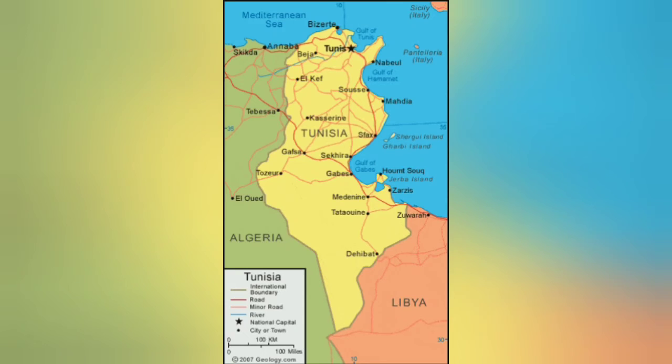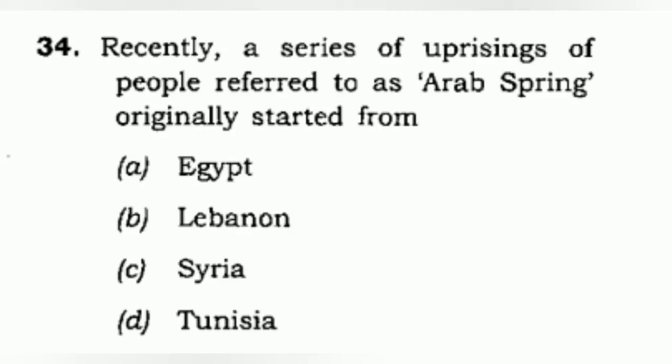Keep revising map questions like this because you can't just mug it up in one hour. The correct answer is Tunisia — the Arab Spring originally started from Tunisia. The capital is Tunis, located in northern Africa along the Mediterranean coast.